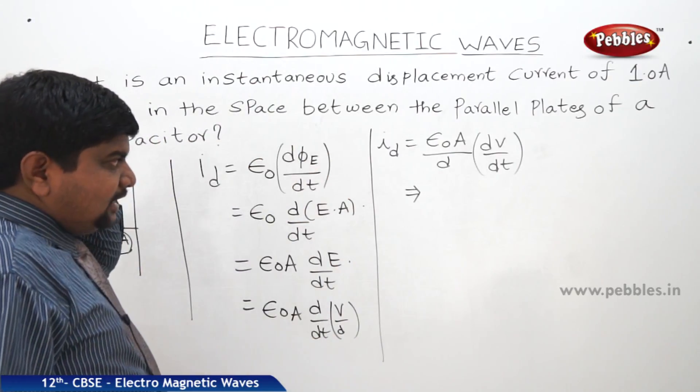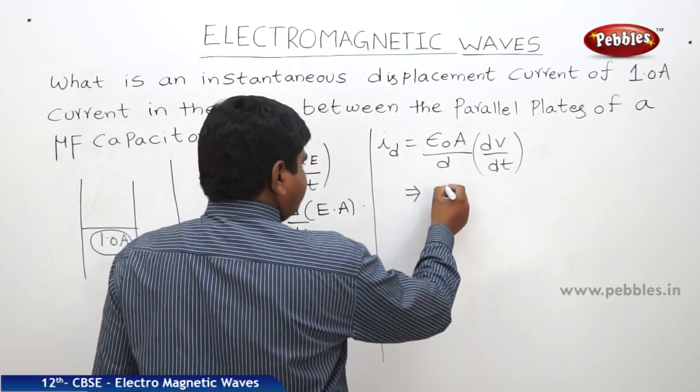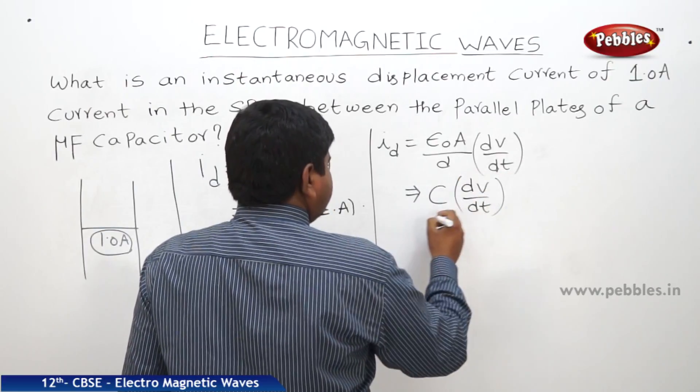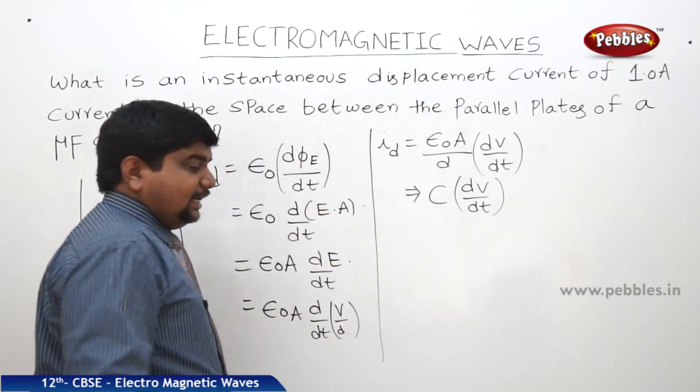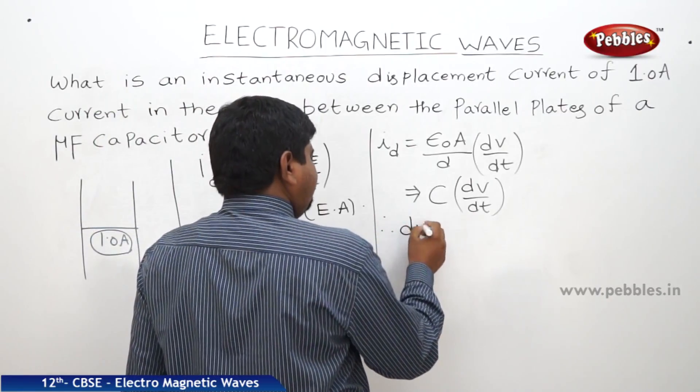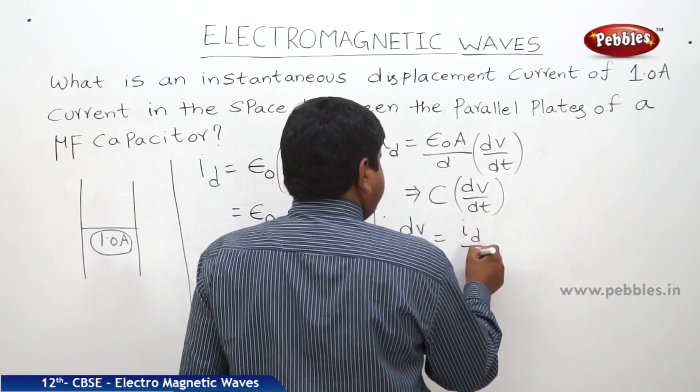Now we can see, what is epsilon 0A by D? Capacitance. Into Dv by dt is equal to Id. Therefore, Dv by dt is equal to Id by C.